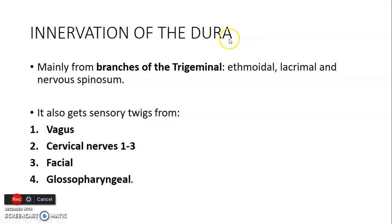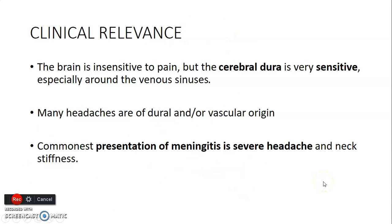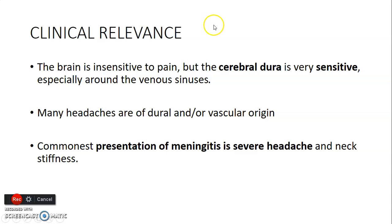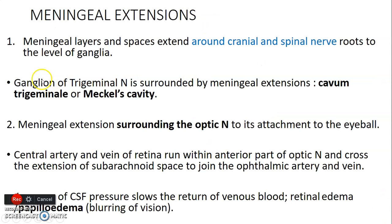The reason to know the innervation is that the brain itself is insensitive to pain, but the dura is not — it has sensory nerves and is very sensitive. When there is bleeding or infection of the dura, such as in meningitis, the headache the patient experiences is due to this nerve supply. The classic presentation of meningitis — headache and neck stiffness — is because of the nerve supply to the dura.